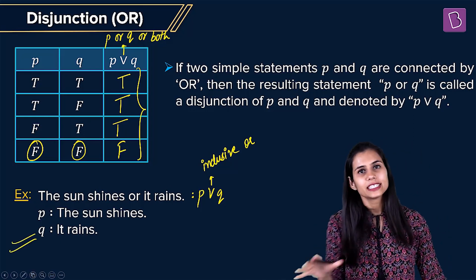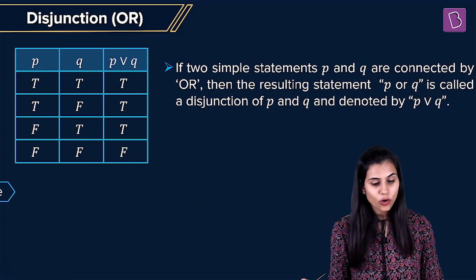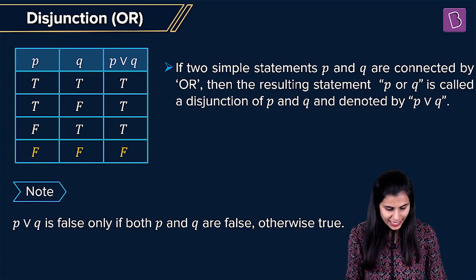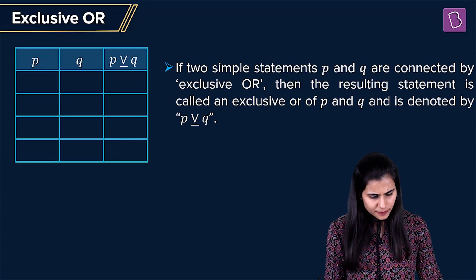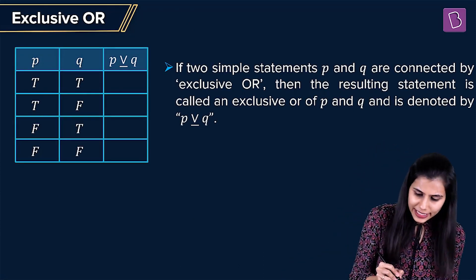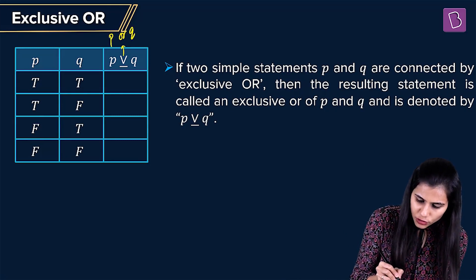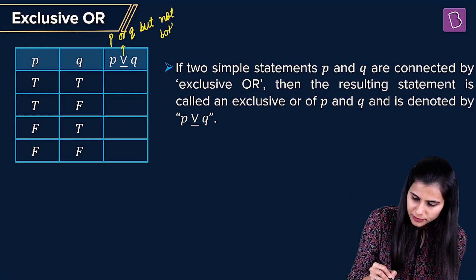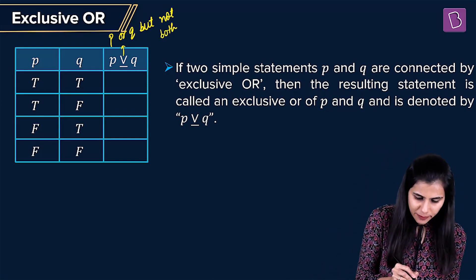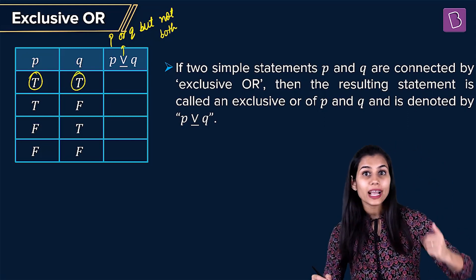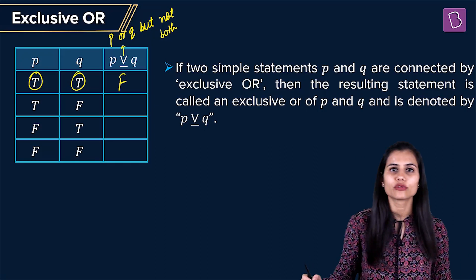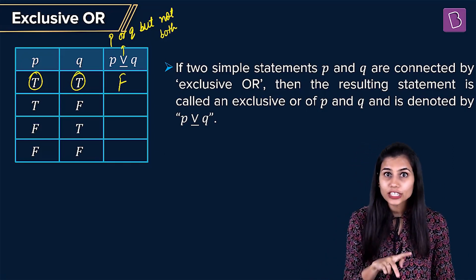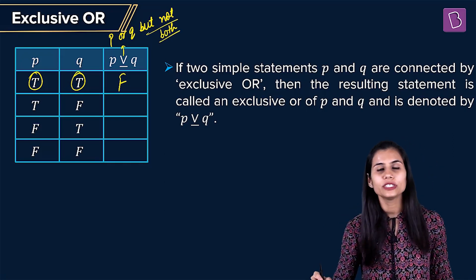Now it's time to move to exclusive OR. As stated, P ∨ Q (inclusive) is false only when both P and Q are false. For exclusive OR, the meaning is P or Q but not both. The first case: P is true and Q is true — you are getting both a Coke and an ice cream with a pizza — that can never happen in exclusive OR. So the outcome is false; both being true simultaneously is not allowed.